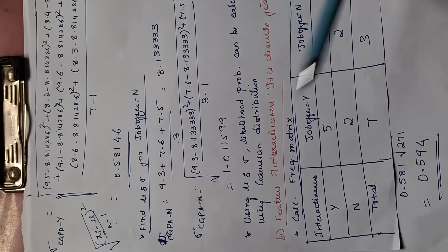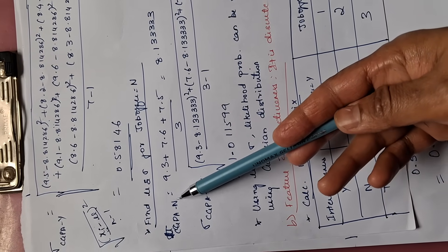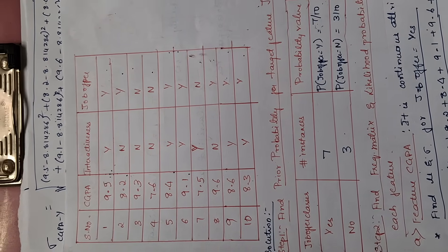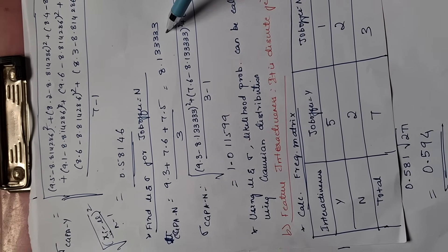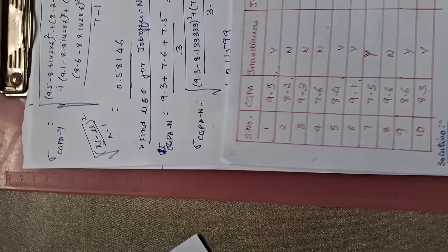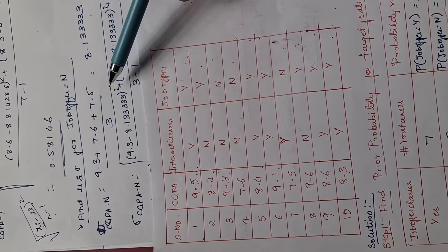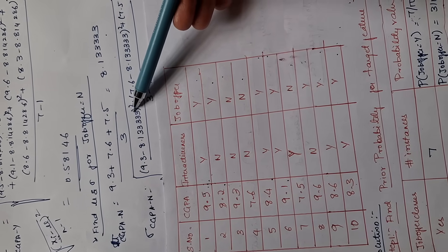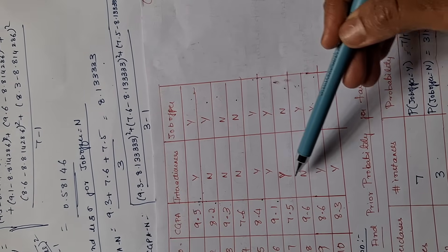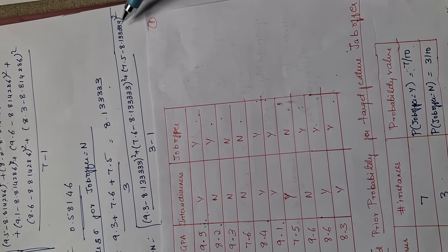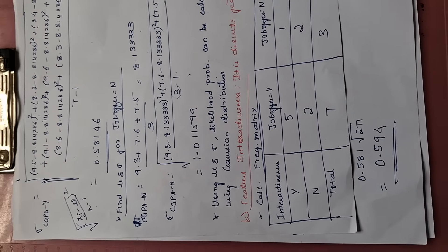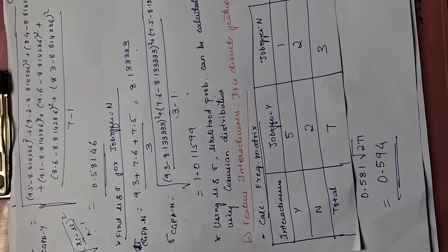Now repeat that for job offer no. The mean μ for CGPA no: add up the no instances and divide. 9.3 + 7.6 + 7.5 divided by 3 gives the mean value for CGPA no. Find the standard deviation for CGPA no the same way: square root of (9.3 − 8.13333)² + (7.6 − 8.13333)² + (7.5 − 8.13333)² divided by 3 minus 1, because total number of no is 3. I got the standard deviation as 1.011594. So now we have calculated mean and standard deviation for job offer yes and no.